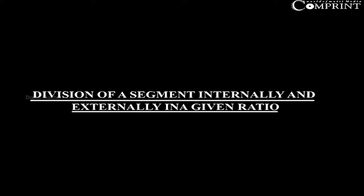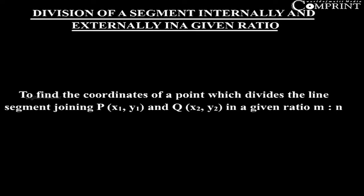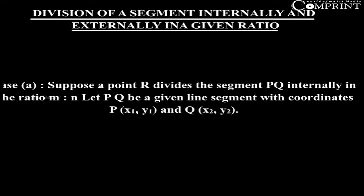Division of a segment internally and externally in a given ratio to find the coordinates of a point which divides the line segment joining P and Q in a given ratio m:n. In case A, suppose a point R divides the segment PQ internally in the ratio m:n.